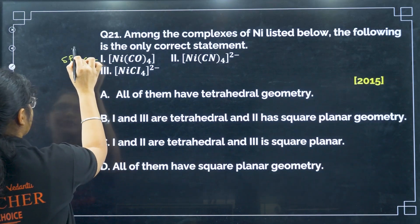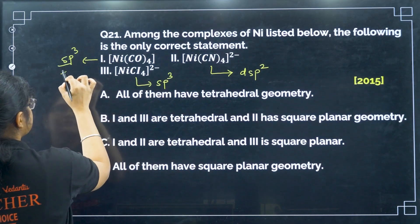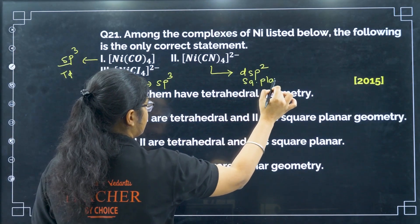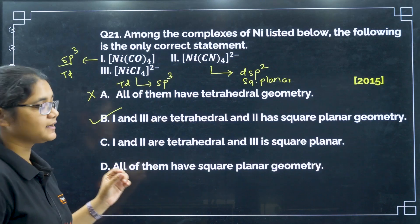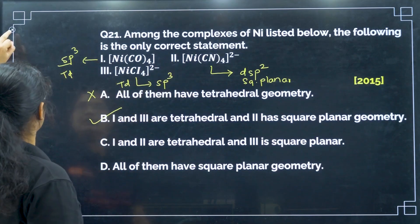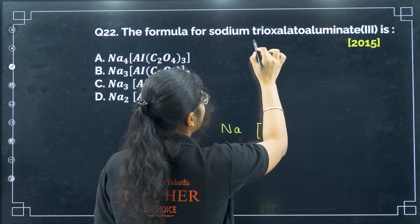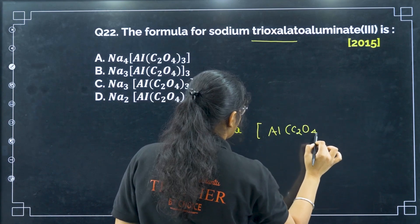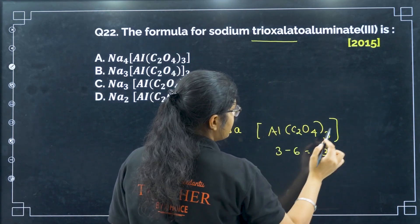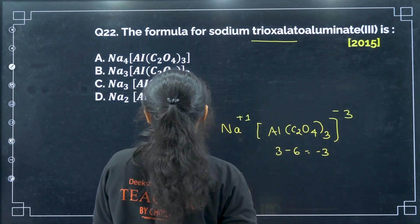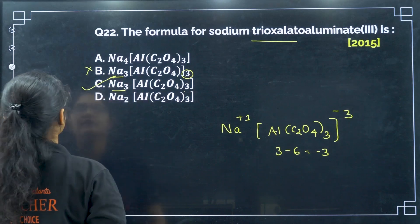Question 21: among the complexes listed, find the only correct statement. Ni(CO)4 has SP3 hybridization and is tetrahedral. Ni(CN)4 2− has DSP2 hybridization and is square planar. NiCl4 2− has SP3 hybridization and is tetrahedral. Therefore, Ni(CO)4 and NiCl4 2− are tetrahedral while Ni(CN)4 2− has square planar geometry — that is the correct statement. Next, the formula for sodium tri-oxalato aluminate (III): aluminum has +3 oxidation state and three oxalate ligands give −6, so the complex is −3. Sodium is +1, giving Na3[Al(C2O4)3] — option C.